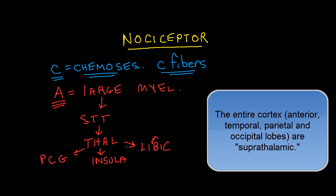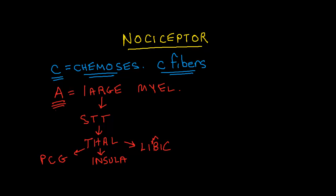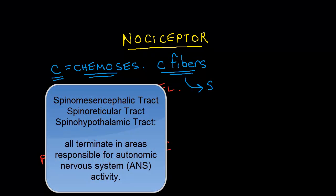What happens with the C fibers predominantly—and since the C fibers are the most numerous sensory receptor and the most numerous type of nociceptor there is—these tend to fire up tracts that are known as the spinomesencephalic tract, the spinal reticular tract, and the spinal hypothalamic tract, amongst others.